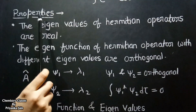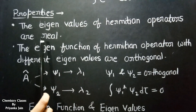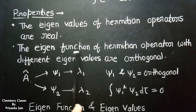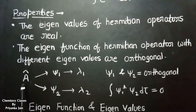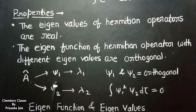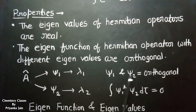The properties of the Hermitian operator are: first, the eigenvalues of Hermitian operators are real; second, the eigenfunctions of a Hermitian operator with different eigenvalues are orthogonal. That means if ψ₁ has eigenvalue λ₁ and ψ₂ has eigenvalue λ₂, then ψ₁ and ψ₂ are orthogonal, which means ∫ψ₁* · ψ₂ dτ = 0.